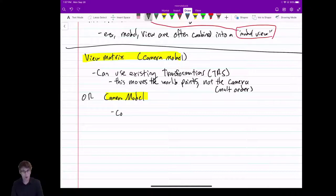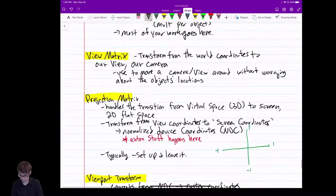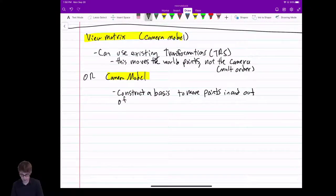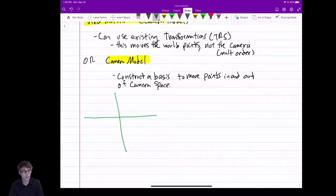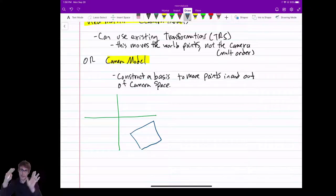So the way that this works is we construct a basis, which moves points back and forth. A basis to move points in and out of camera space. So it kind of looks like this. I have a coordinate system here, and I'm going to draw a camera down here. And my camera's in the world right here, looking at the world, at this rotation angle, it's fine. This is where the camera's looking.